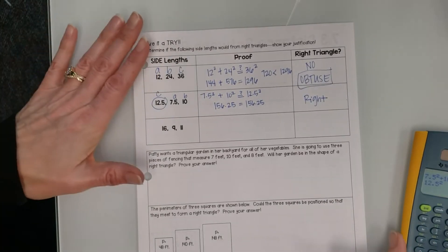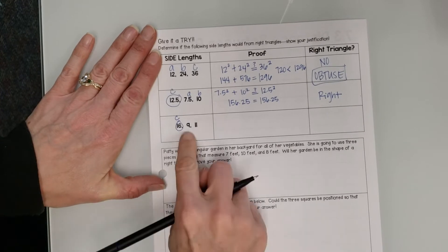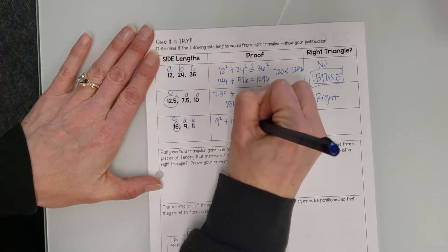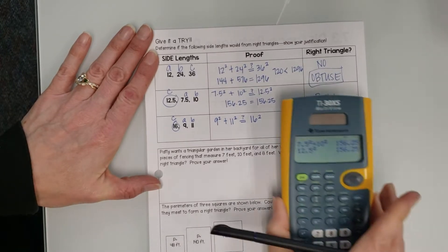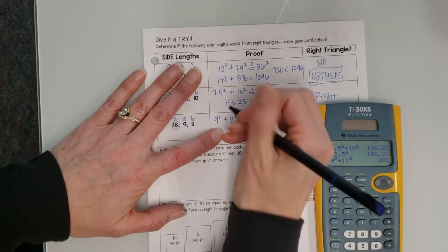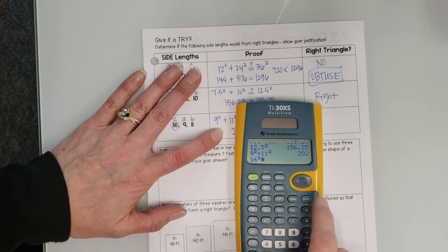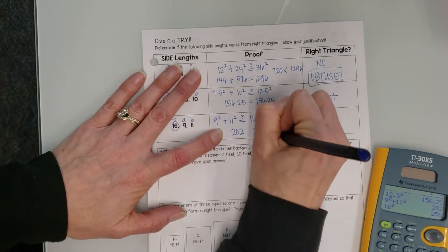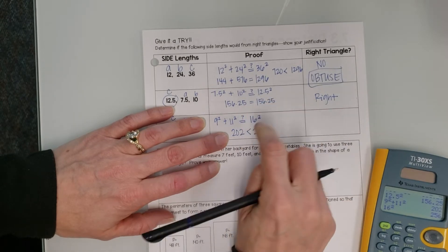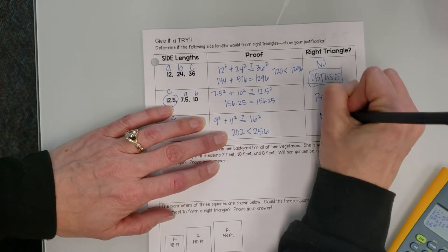Okay, this one right here, again they're not in numerical order. 16 is the biggest number there, so that one is C. So this one could be A and B, doesn't matter which one's which. So 9 squared plus 11 squared, and I want to know does that equal 16 squared. So again, I'm just going to do that all-in-one thing on my calculator. So 9 squared plus 11 squared, enter. So that's 202, and then 16 squared is 256. Okay, so these are not equal. The inequality symbol would be 202 is less than 256, and if you remember, when A squared plus B squared is less than C squared, that is an obtuse triangle.